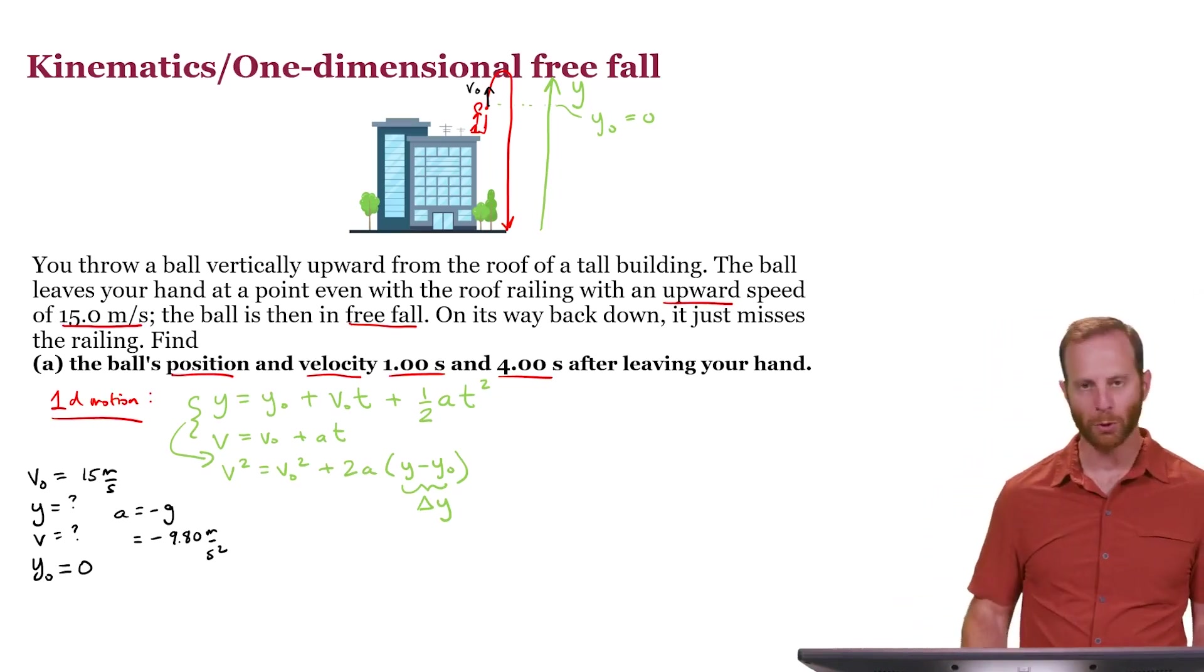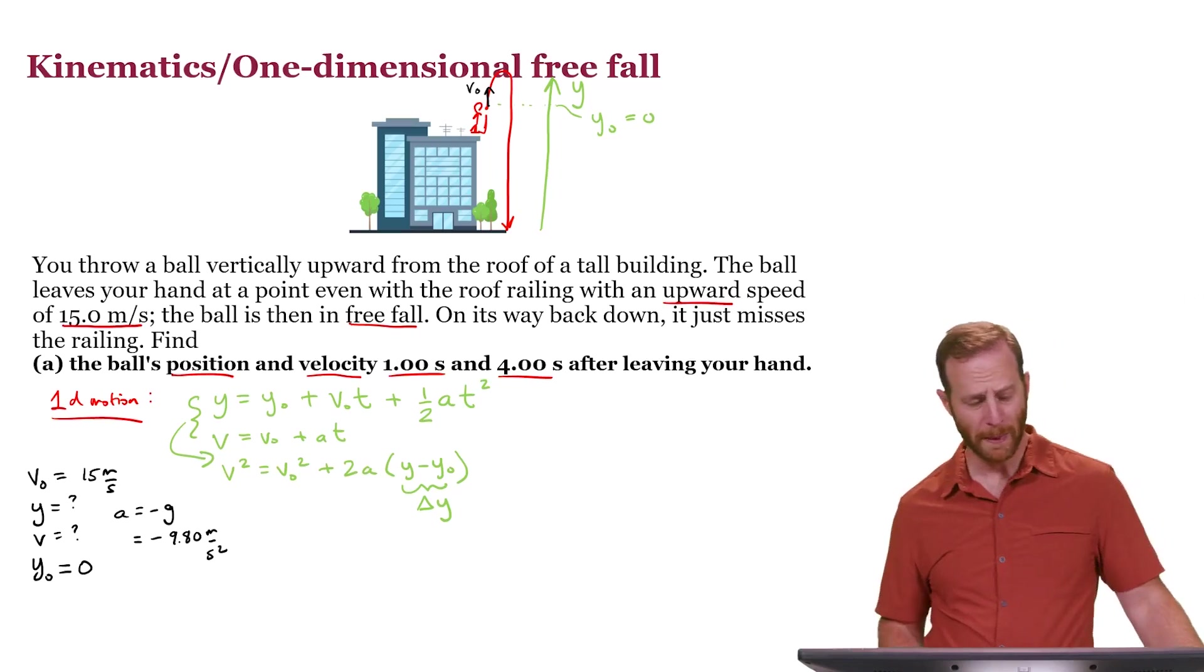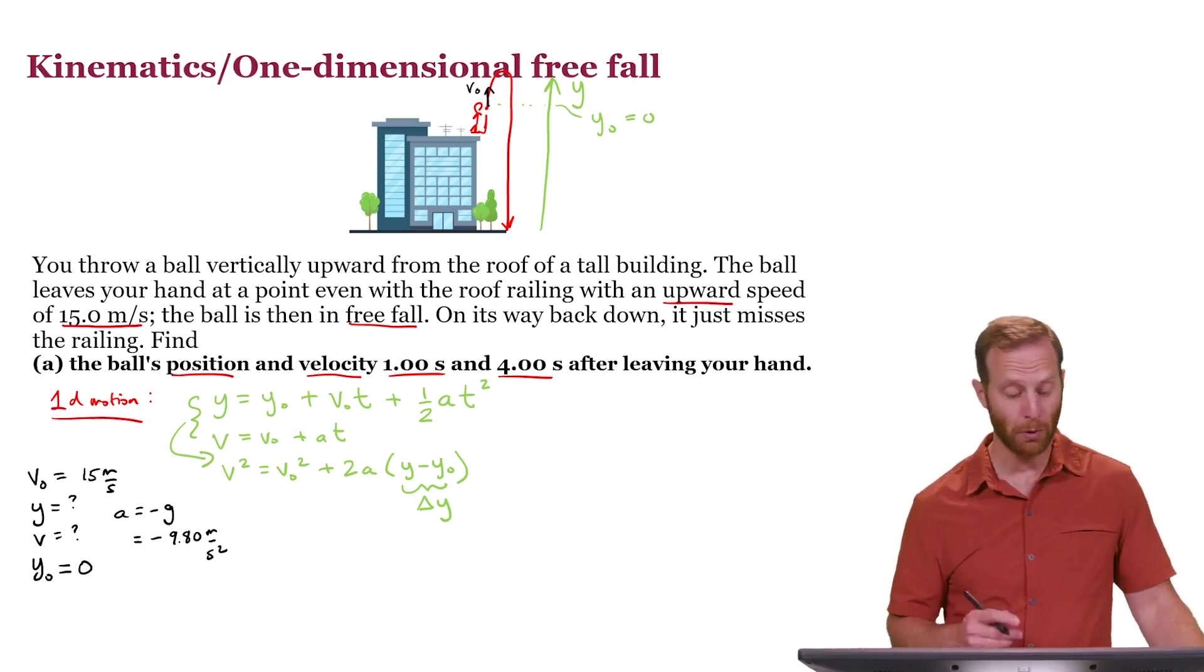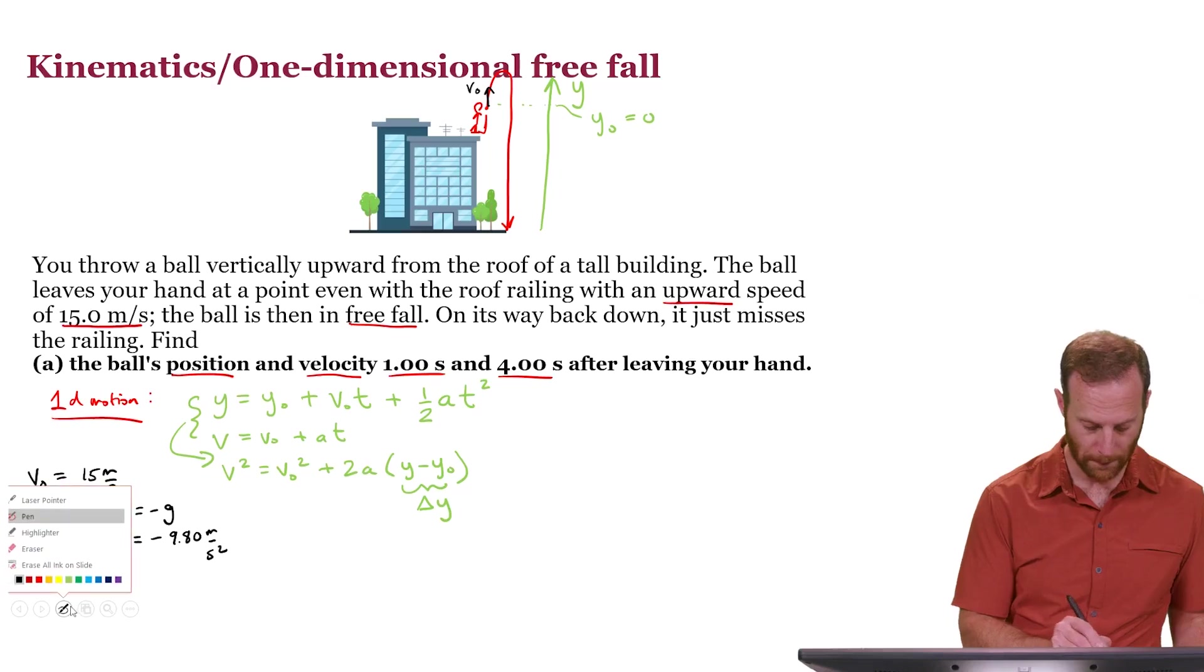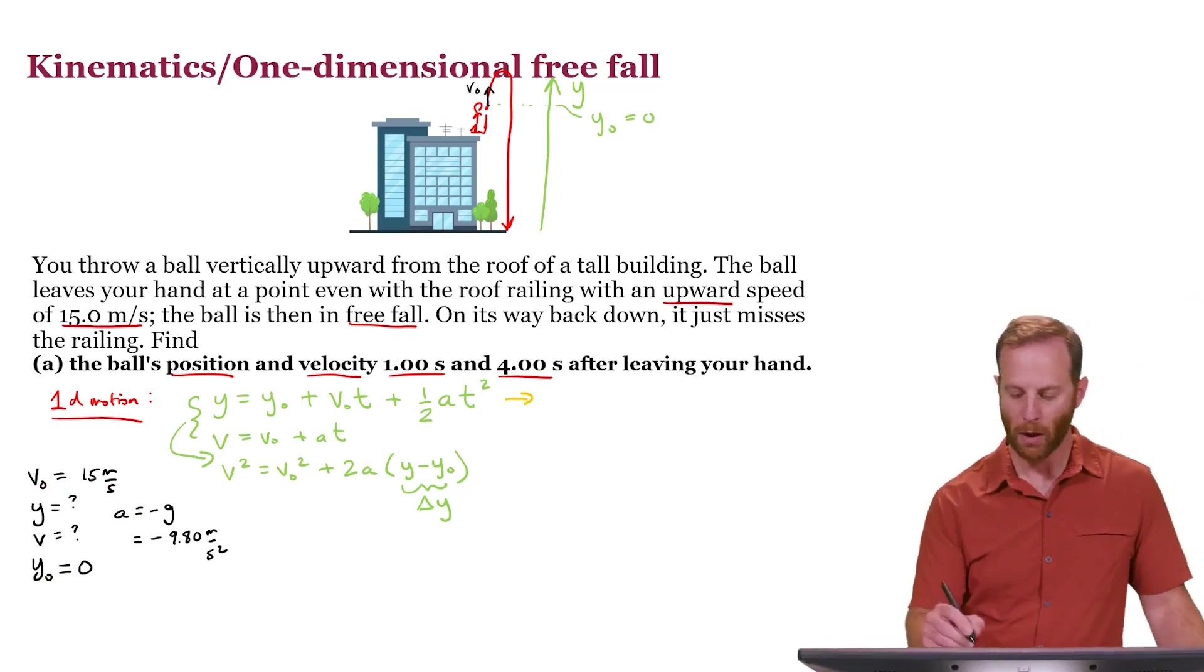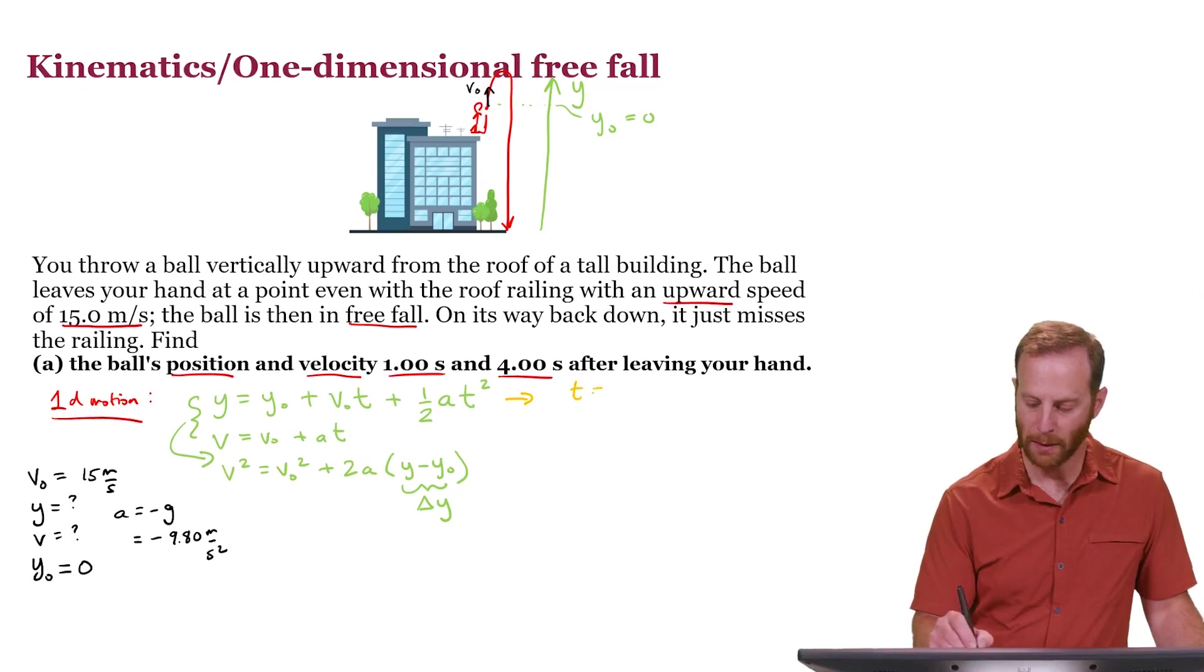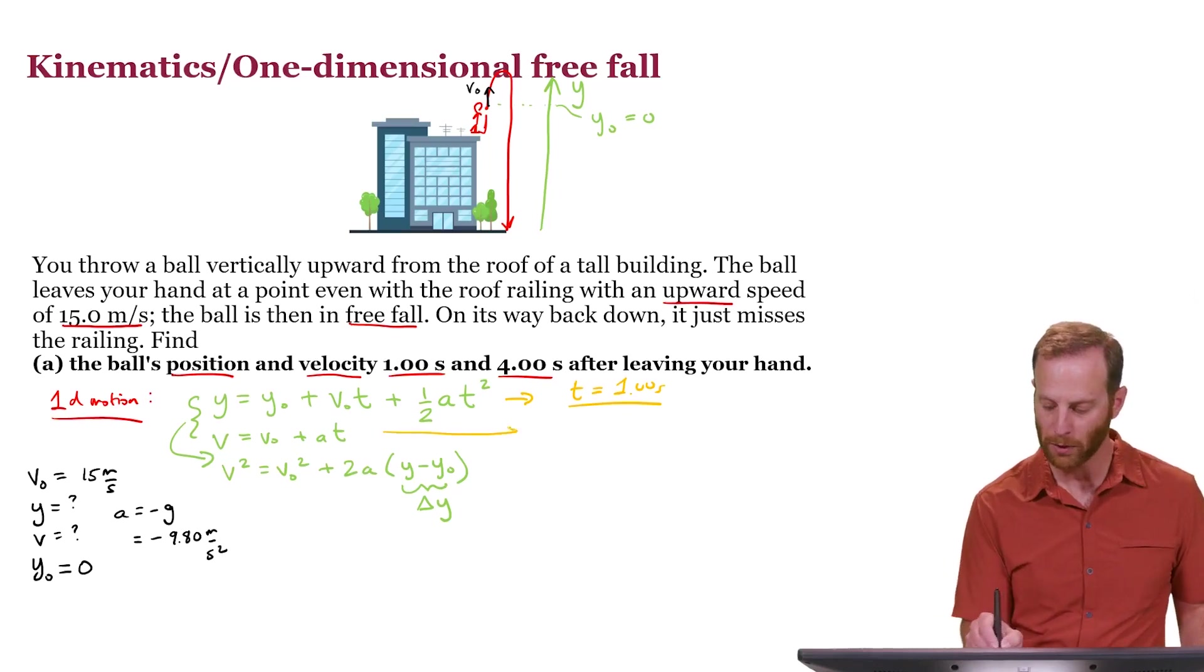These variable choices are going to be consistent throughout this entire problem. At this point, there's not much to do other than to simply plug and chug. So let's go ahead and do that. We can use this equation to figure out what happens at t is equal to 1.0 seconds. We can figure out what is happening with the position and with the velocity.